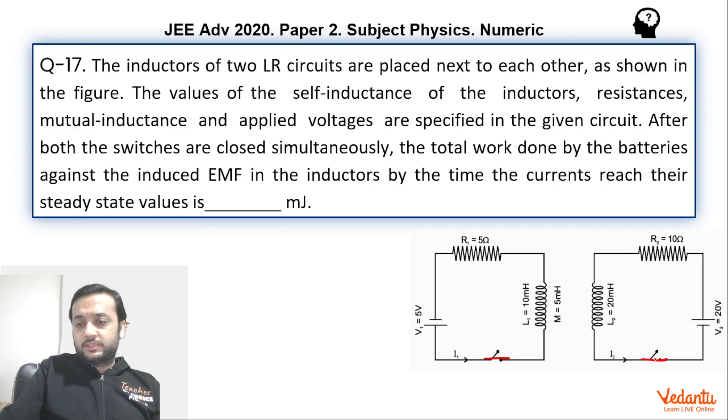When we close the circuit, it's easy to see that finally the steady state current in the first circuit will be 5 upon 5 which is 1 Ampere, and the second circuit will be 20 upon 10 which will be 2 Ampere. Transient current, that means time-varying functions, will be I1 and I2, both will be time-varying functions.